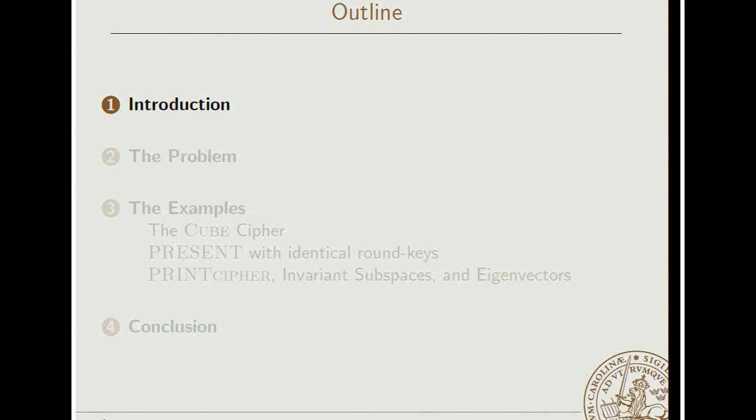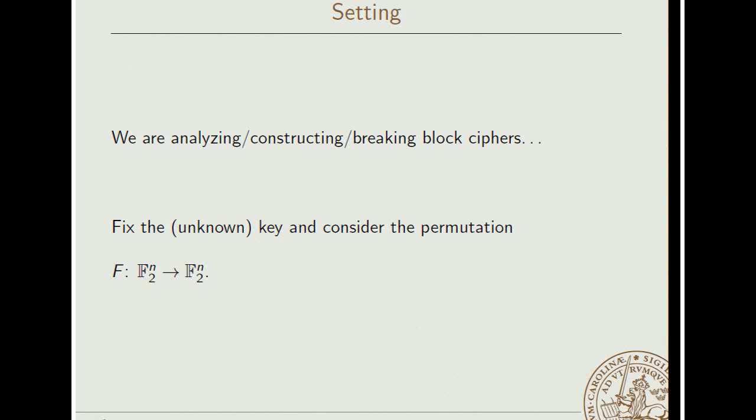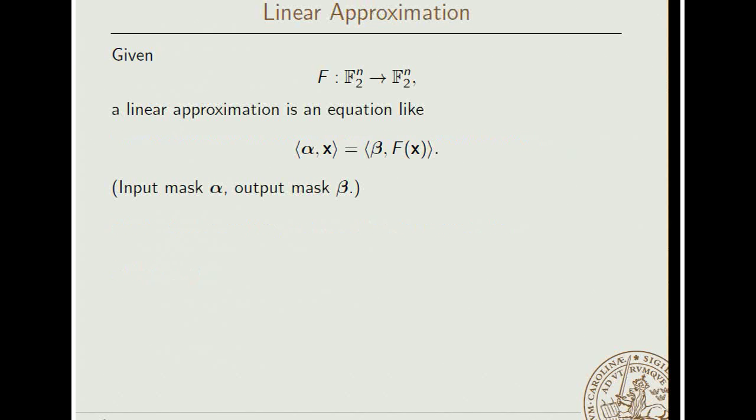First, the general framework that we will be considering here. So we have block ciphers. We just fix the random unknown key and consider the function f, a permutation over n bits. Now we study this function f using linear approximations. So these brackets are used to denote the canonical inner product, meaning we take the input to the function x and a bit string alpha. And then when we multiply this together, we simply pick bits from x as specified by alpha, and we add them together and get a new bit. We do the same with the output f of x using a bit mask beta.